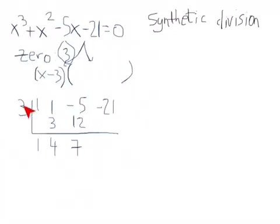Then you multiply again. Three times seven is 21. And then notice that I have zero. I have a remainder of zero.